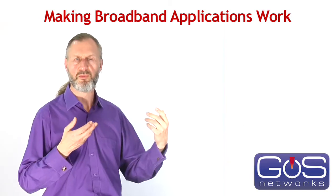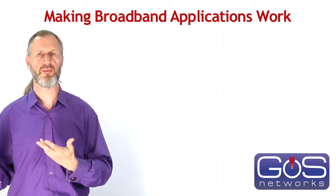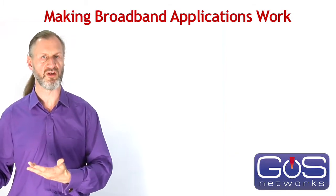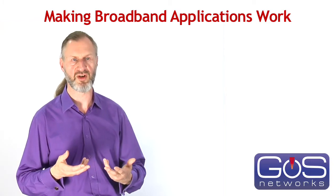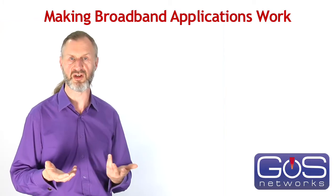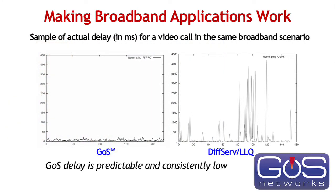The bad behavior seen in the theoretical analysis is something that can actually happen in real life. The link is very congested, but the whole purpose of a QoS mechanism is to give protection for critical traffic when the link is congested — so this is why we need to test them under these circumstances. The key point is that the delay GOSS gives is predictable and consistently low, not just for the highest priority traffic, but for all classes of traffic being given protection.